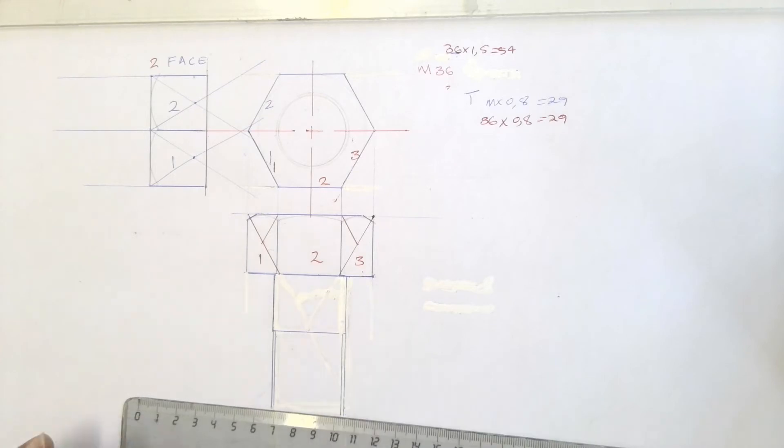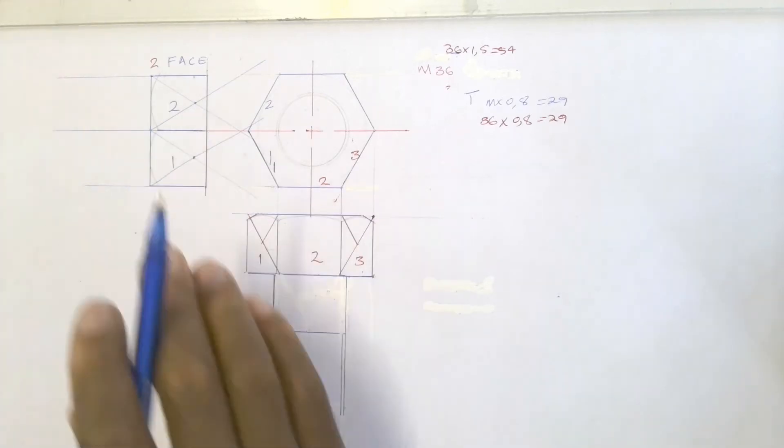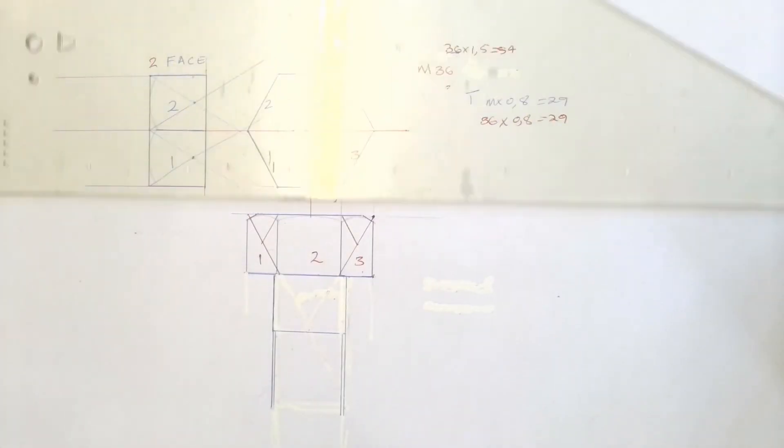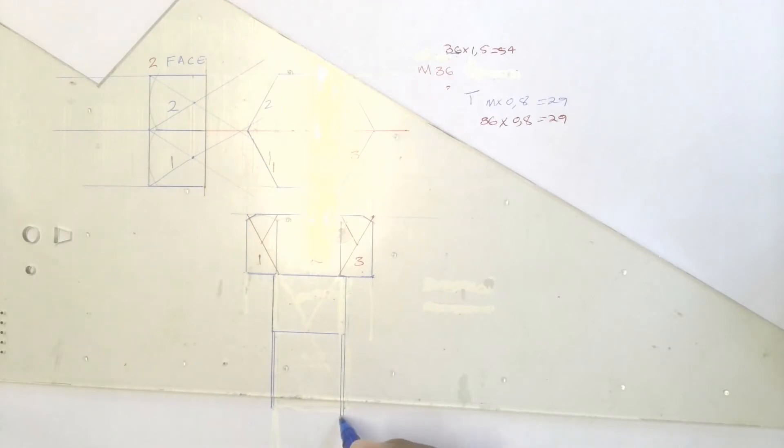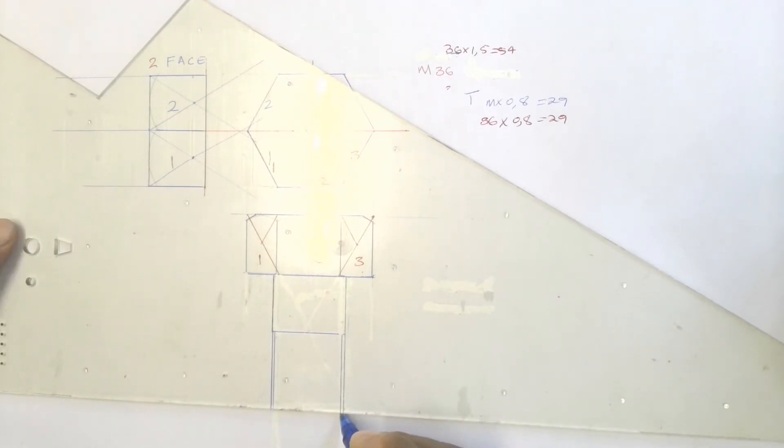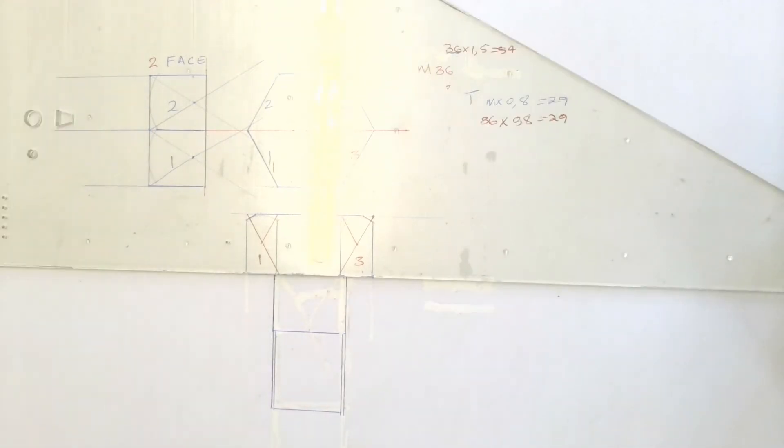What I'm going to do now is construct a line showing that this is where it stops. It stops here. Now I'm going to use the internal part, it stops here, that's the stop. So it will be chamfered using a 45-degree set square.